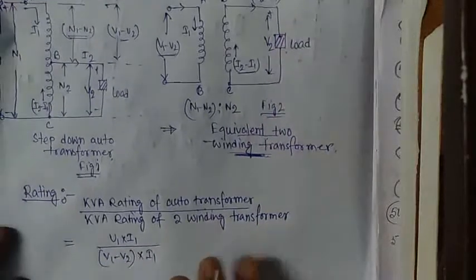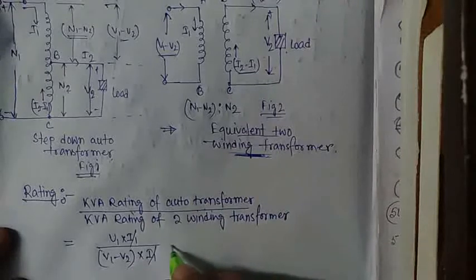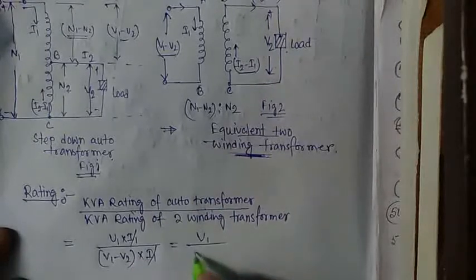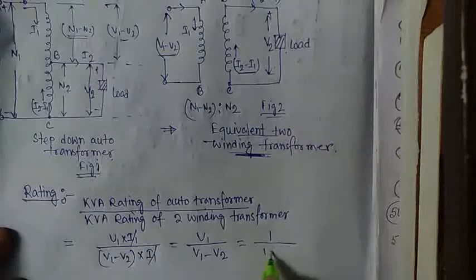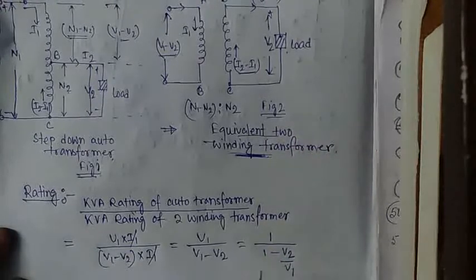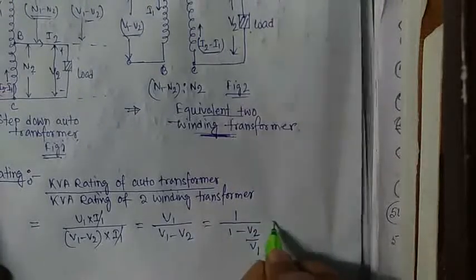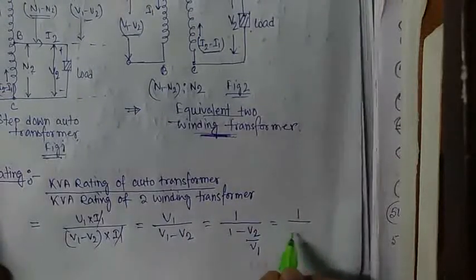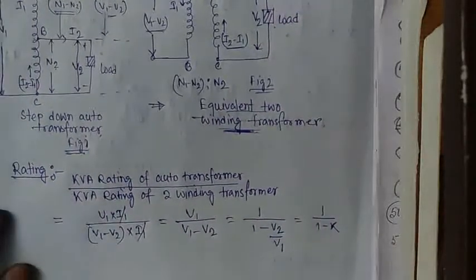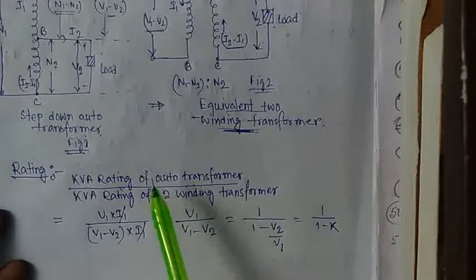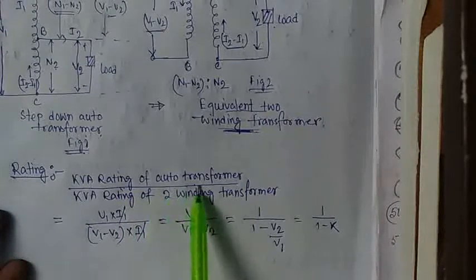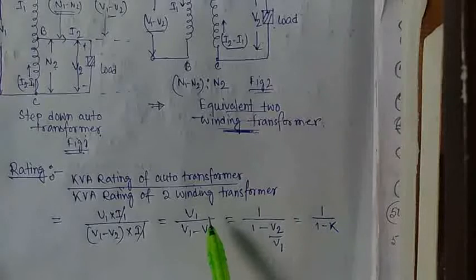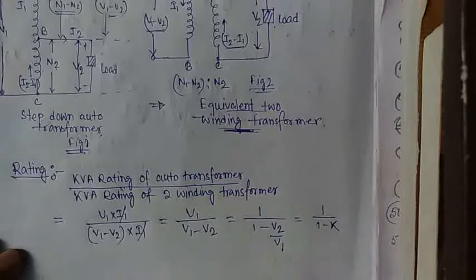Here I1 and I1 cancel, giving V1 divided by V1 minus V2, which equals 1 divided by 1 minus V2 over V1. Since V2 over V1 equals K, this can be written as 1 over 1 minus K. So the KVA rating of the autotransformer to the KVA rating of the equivalent two winding transformer equals 1 over 1 minus K.